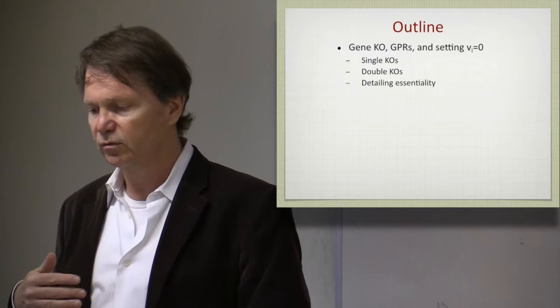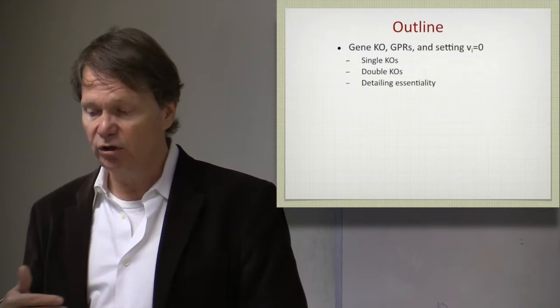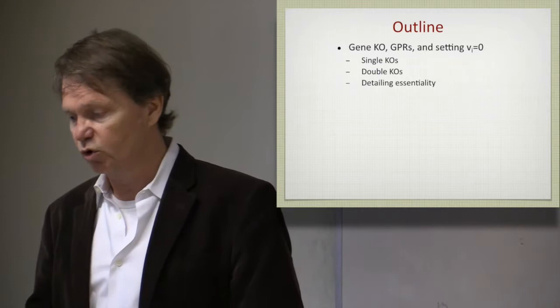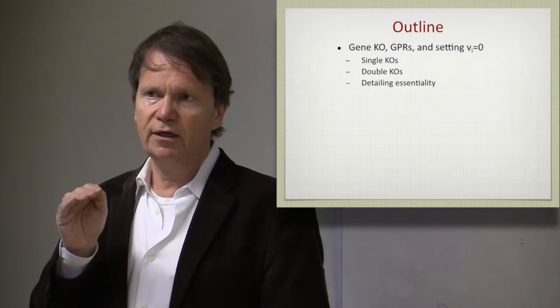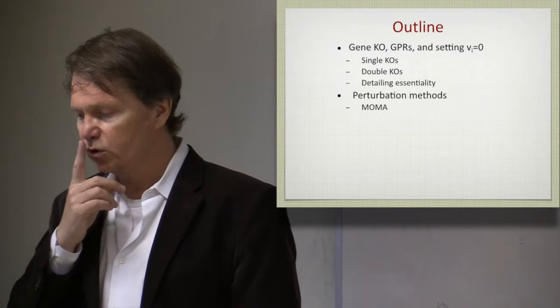The first thing we'll talk about is how we do single gene knockouts, or single and double gene knockouts, and how we trace the effect of a gene knockout through the GPRs. We set certain fluxes to zero, and we constrain the solution space by doing that. And we are very interested in gene essentiality, to see when is growth rate driven to zero, which are the essential genes in a given condition.